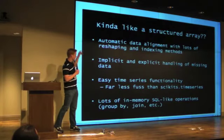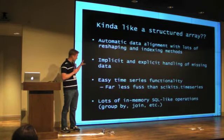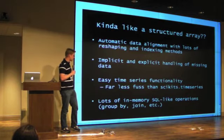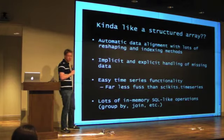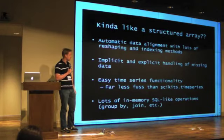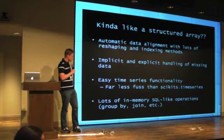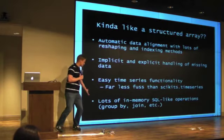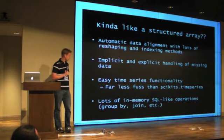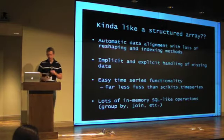It happens to be very good for time series, but also a lot of other things. Key features are automatic data alignment with lots of indexing and reshaping. It does missing data really well, both implicitly and explicitly. It's got great time series stuff. I've used Scikit's time series but I find it hard to use, and I work a lot with multiple time series, which isn't really well supported in Scikit's time series. So if you've got time series data and find yourself struggling, take a look. And there's a lot of stuff for doing SQL-like operations — merging, joining, that kind of thing.